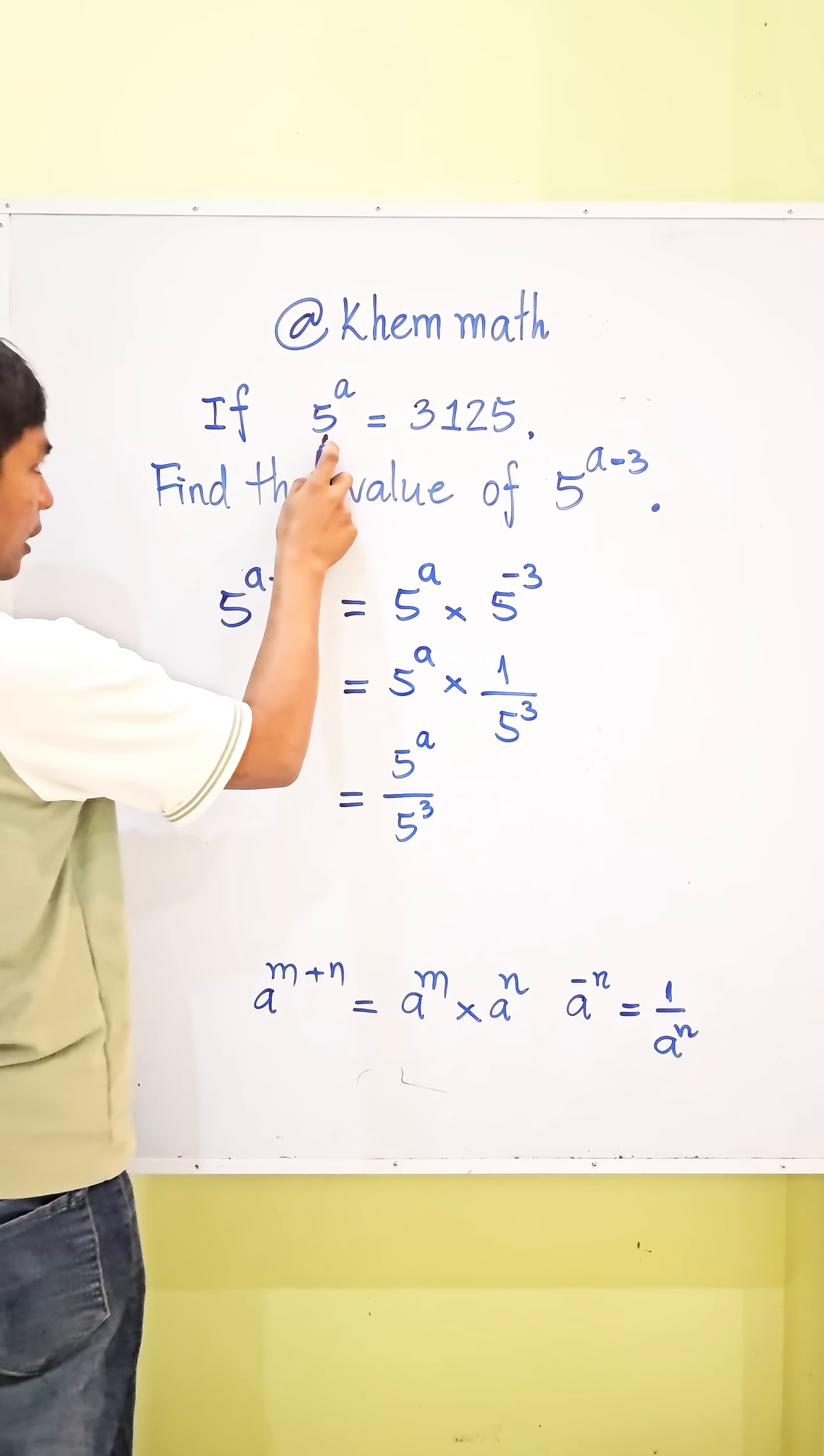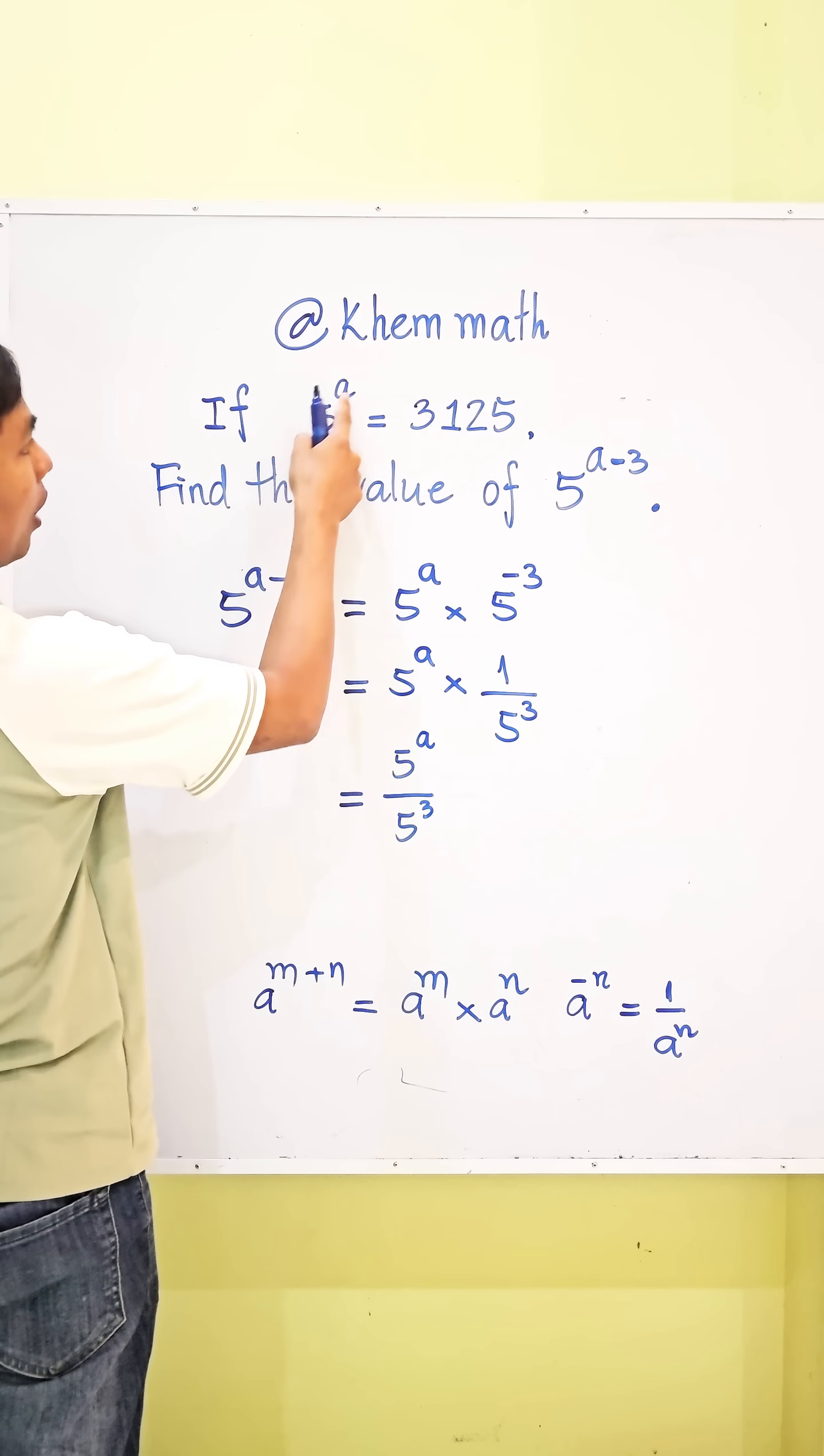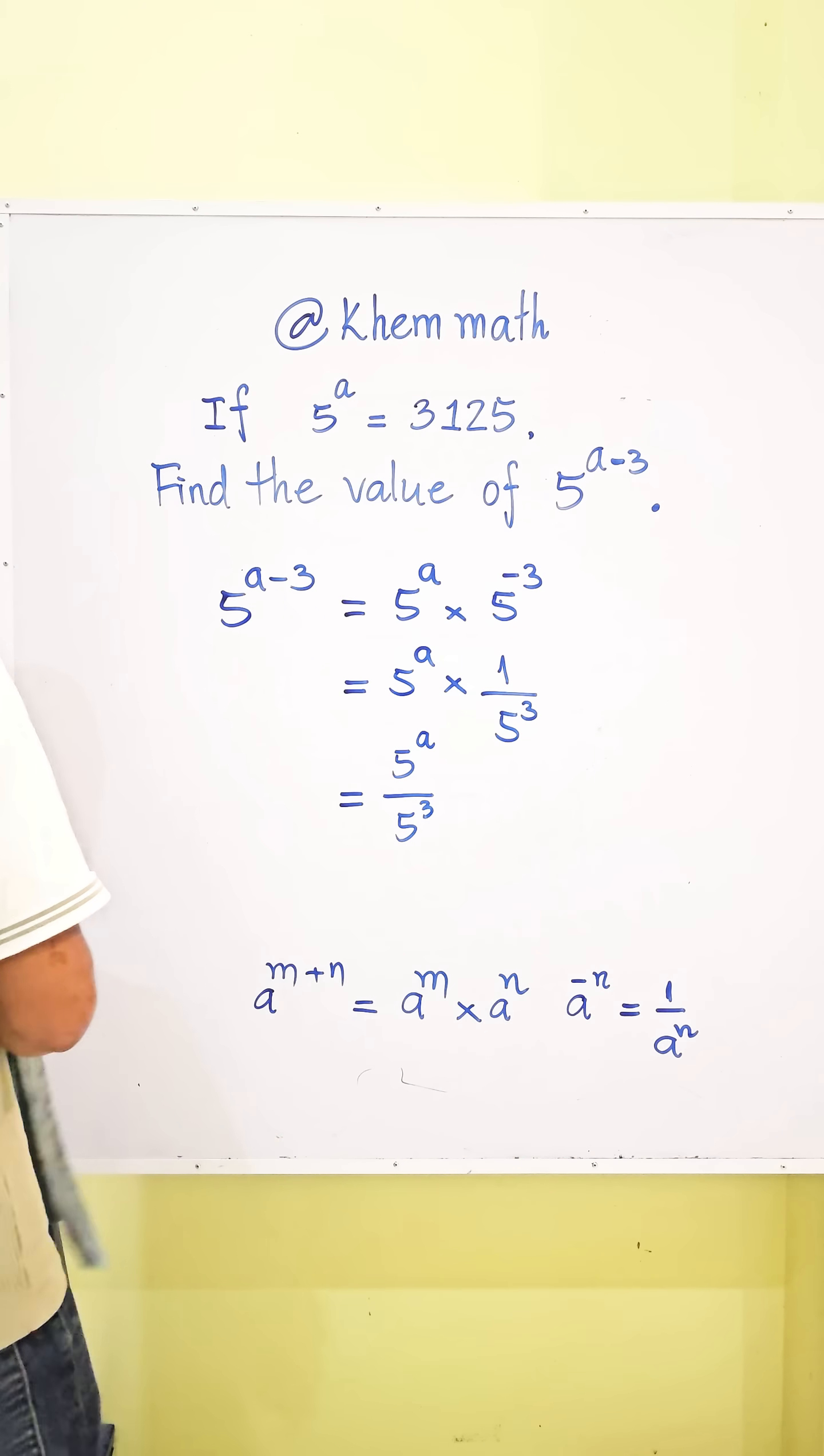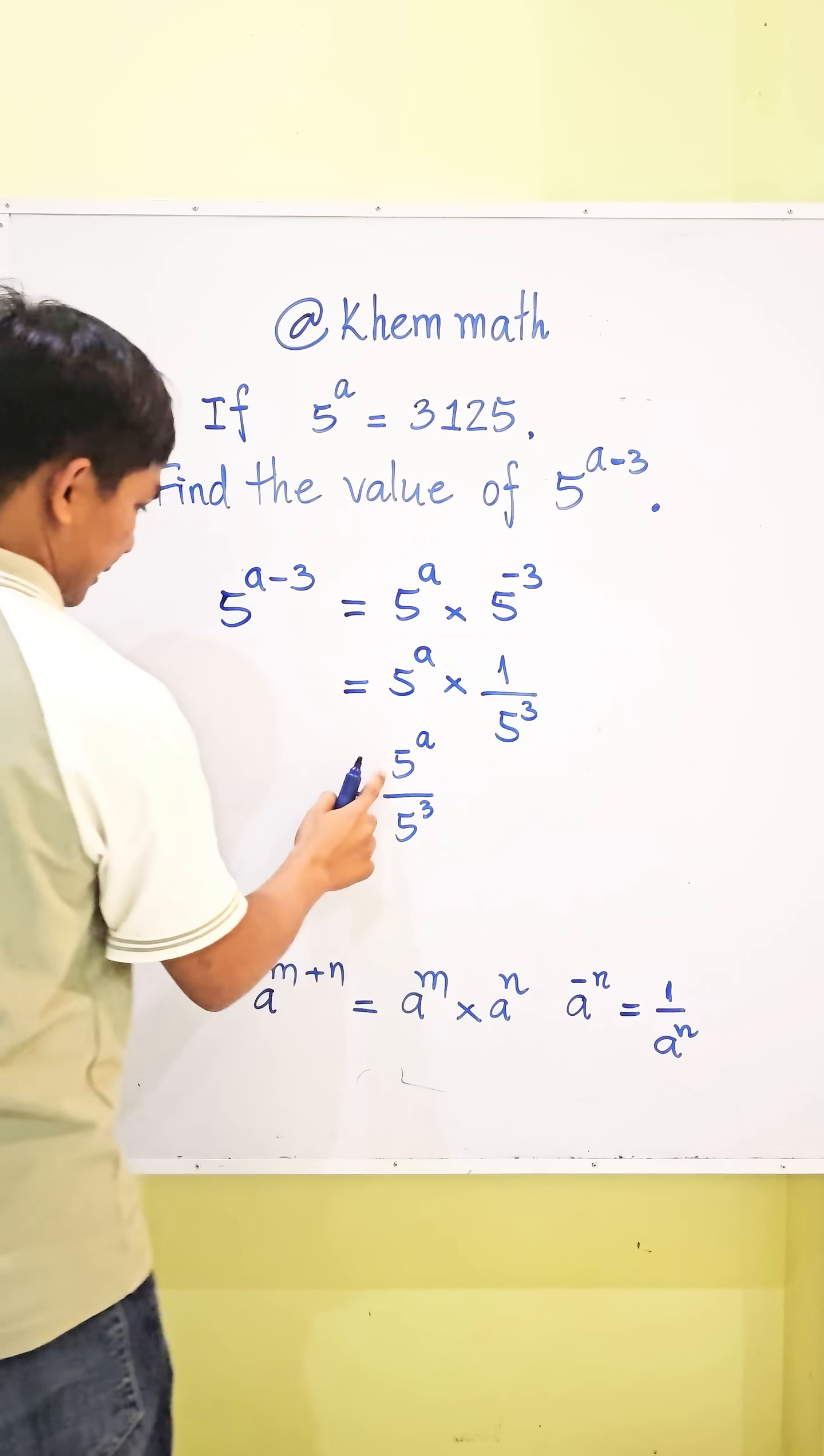And then, look, here, 5 power A equals 3,125. So, we replace it in this.